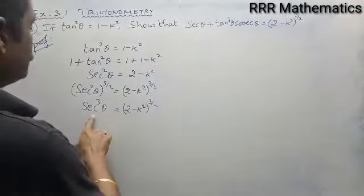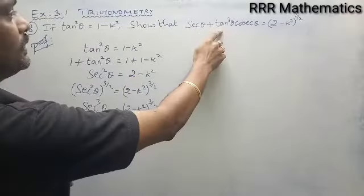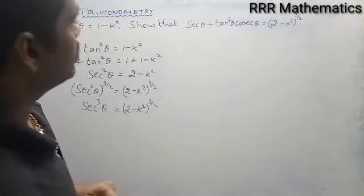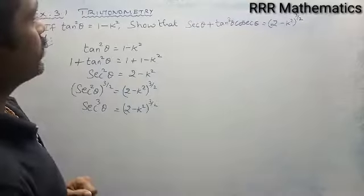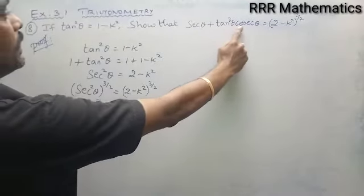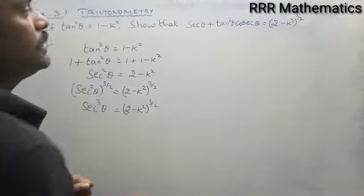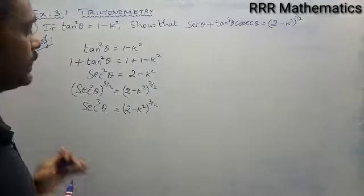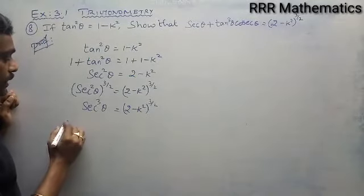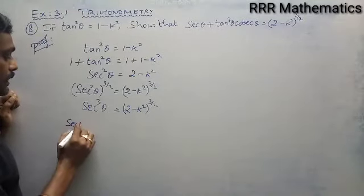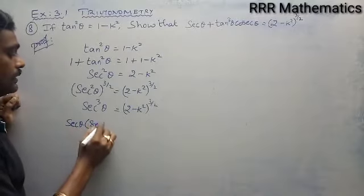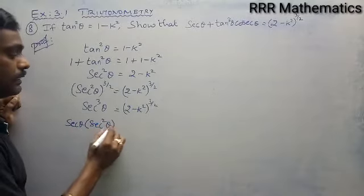But on the left hand side I have secant cube theta, whereas the actual left hand side expression is a bigger trigonometric function: secant theta plus tan cube theta into cosecant theta. The secant cube theta can be written as secant theta into secant squared theta.